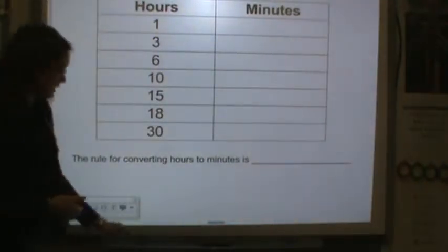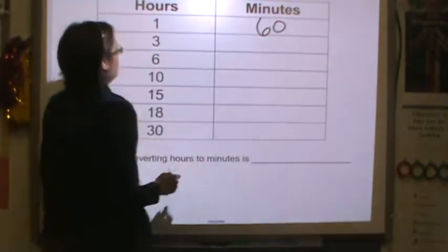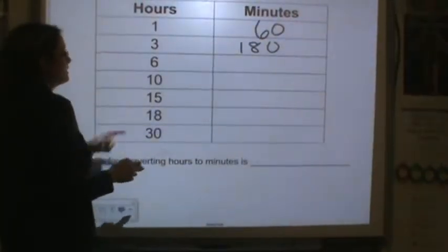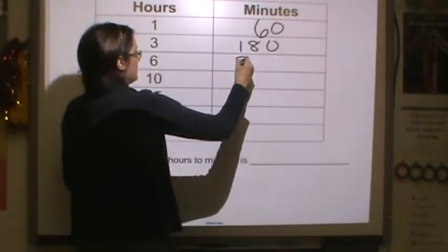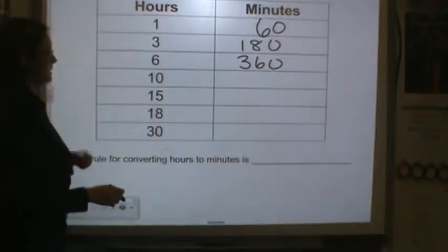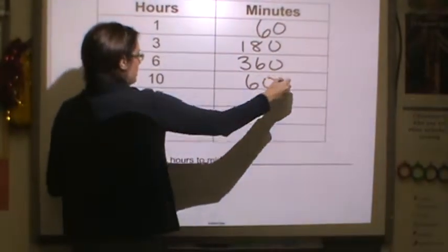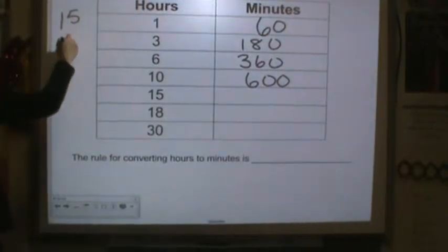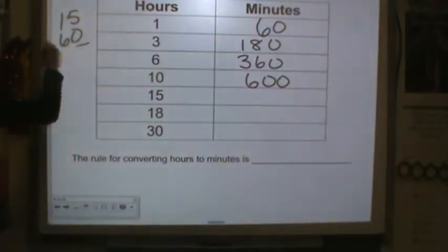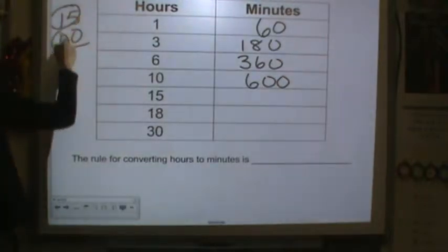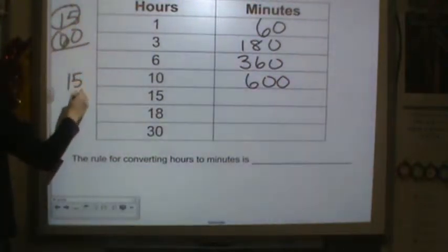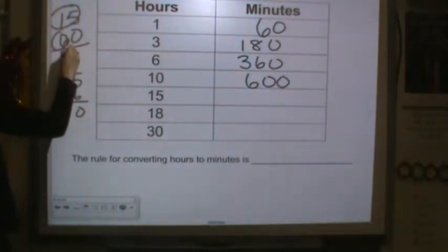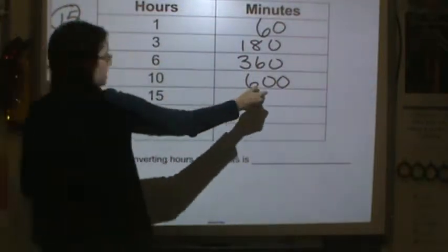So hours to minutes. One hour has 60 minutes. Three hours has 180 minutes. Six hours has 360 minutes. Ten hours has 600 minutes. 15 hours, let's see, 15 times 60. Basic fact, so 6 times 15. 6 times 5 is 30. 6 times 1 is 6 plus 3, so 90 out of 0. So 900 minutes.